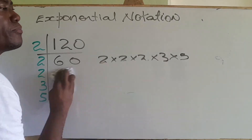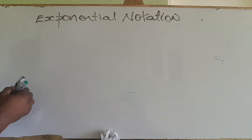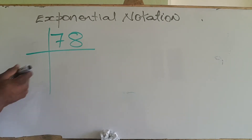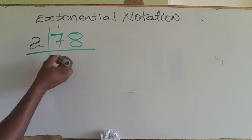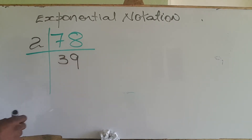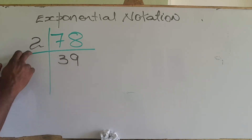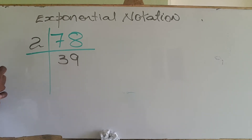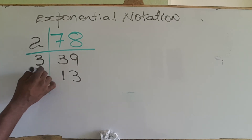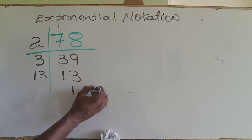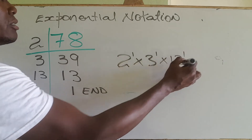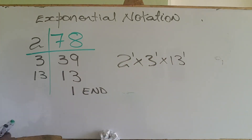Let's look at another example — let's choose 78. 2 into 78 gives us 39. 2 won't work again, but 3 can. 3 into 39 is 13. 3 can't divide 13, so we use 13, which is itself a prime. 13 into itself is 1 — we are at the end. This means 78 can be written as 2¹ × 3¹ × 13¹.